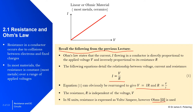Resistance in a conductor occurs due to collisions between the electrons and fixed charges. In most materials — for a linear or ohmic material such as most metals and ceramics — as voltage and current increase, they increase at a constant rate. Because it is an ohmic material, this complies with Ohm's law.